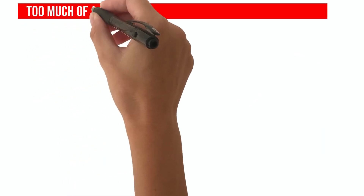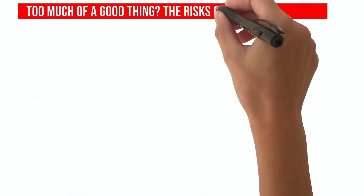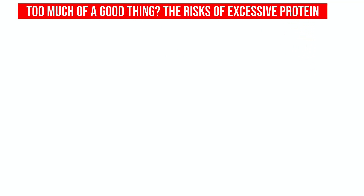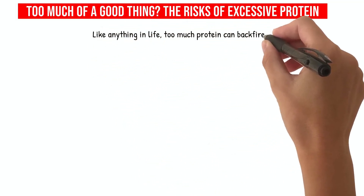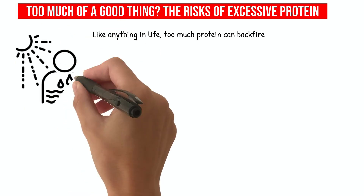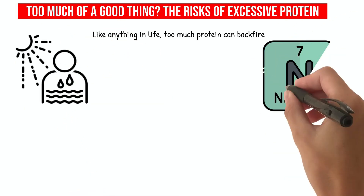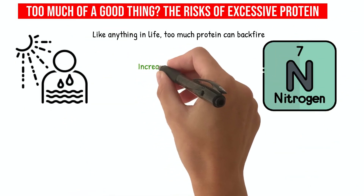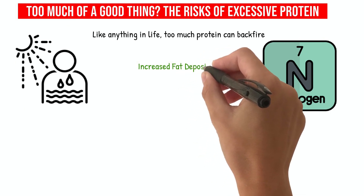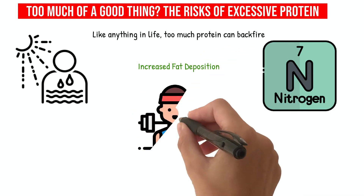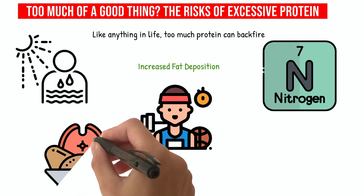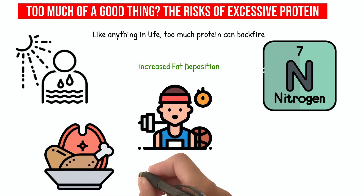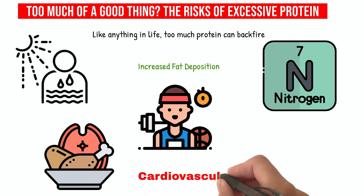Too much of a good thing: the risks of excessive protein. Like anything in life, too much protein can backfire. Overdoing it can dehydrate you, as your body works overtime to get rid of excess nitrogen, and might lead to increased fat deposition — definitely not what an athlete wants. Plus, if you're getting your protein from fatty animal sources, watch out for the risk of cardiovascular diseases.